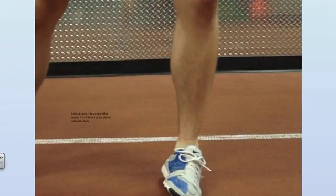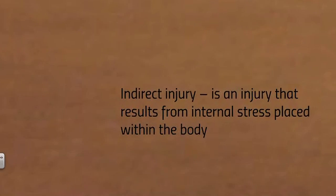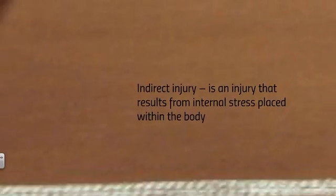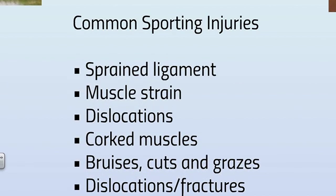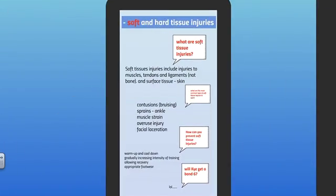Moving on to indirect injuries: an indirect injury is an injury that results from internal stress placed within the body. An example could be in a game of tennis or squash, where a player overreaches and puts too much force or stress on the ankle, resulting in an ankle sprain from the ankle rolling. Some common types of sporting injuries are listed there, and we'll look at those in more depth in later videos on sports medicine.